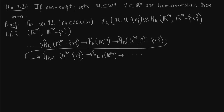This is zero because Rm is homotopically equivalent to a point, whose reduced homology is zero. So we get an isomorphism here.